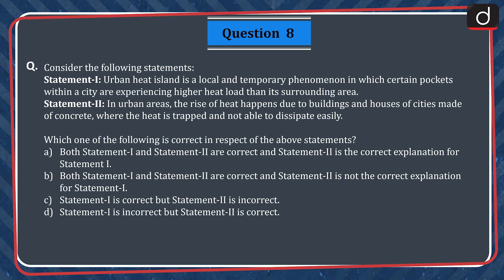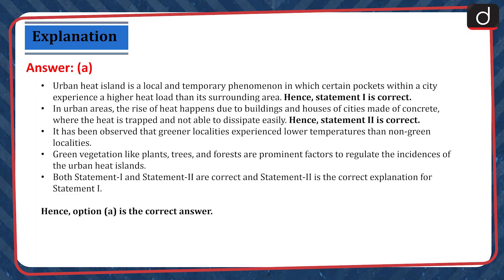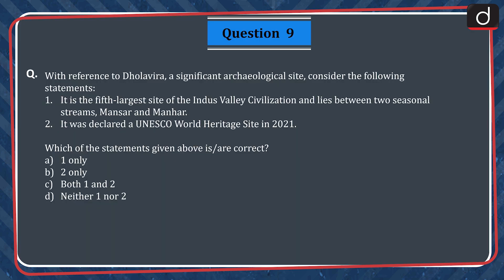The correct answer is Option A. Urban heat island is a local and temporary phenomenon in which certain pockets within a city experience a higher heat load than the surrounding area — hence Statement 1 is correct. In urban areas, the rise of heat happens due to buildings and houses made of concrete where heat is trapped and not able to dissipate easily — hence Statement 2 is correct. It has been observed that greener localities experience lower temperatures than non-green localities. Green vegetation — plants, trees, and forests — are prominent factors in regulating the incidence of urban heat islands. Both Statement 1 and Statement 2 are correct and Statement 2 is the correct explanation for Statement 1. Hence, Option A is the correct answer.